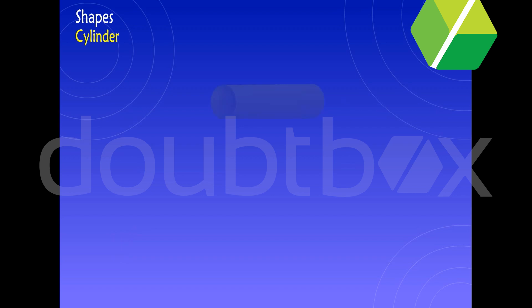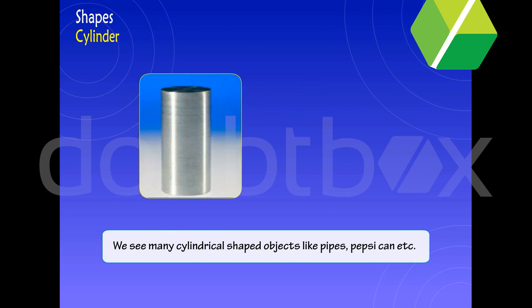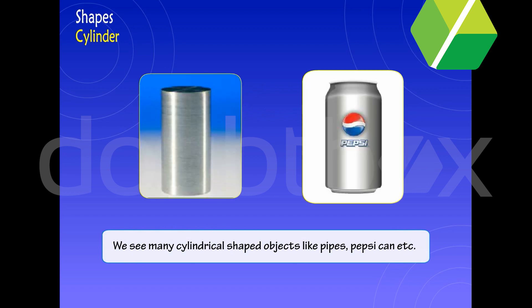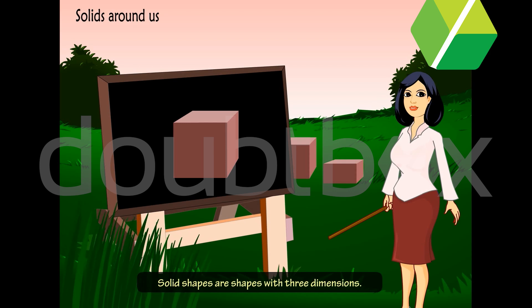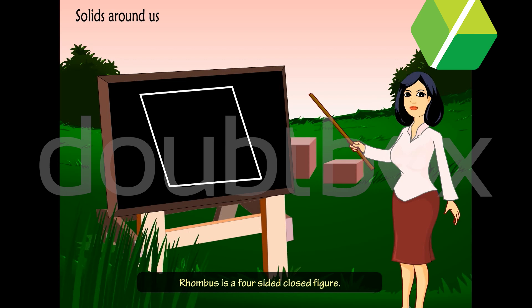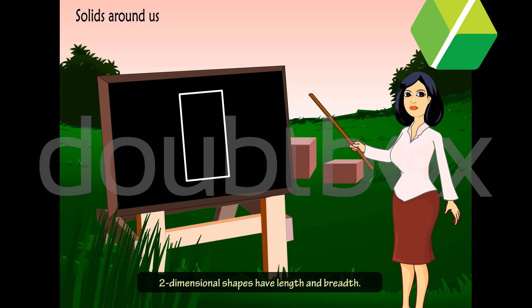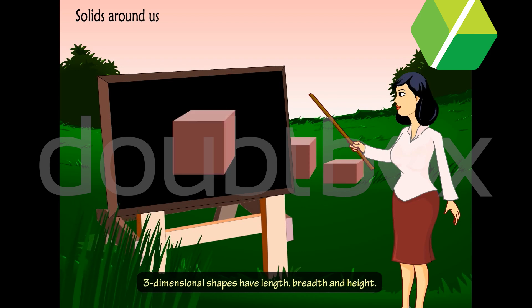Cylinder. We see many cylindrical-shaped objects, like pipes, Pepsi cans, etc. Solid shapes are shapes with three dimensions. Rhombus is a four-sided closed figure. Two-dimensional shapes have length and breadth, while three-dimensional shapes have length, breadth, and height.